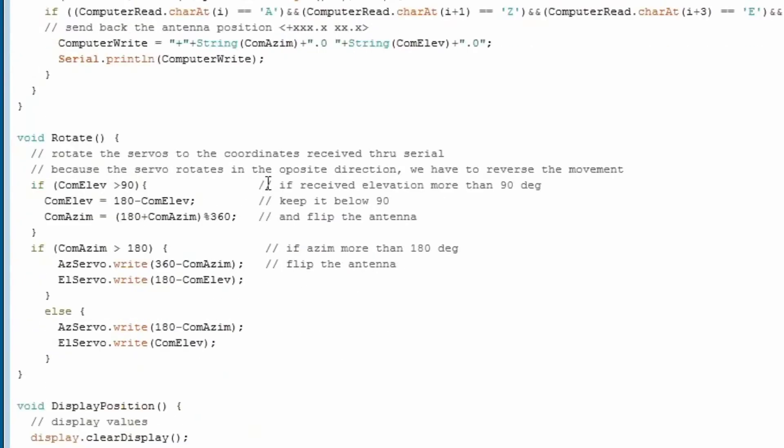The encoders only move 180 degrees. In order to cover 360 horizontal, I had to make a trick and in the second half of the circle, the antenna turns on its back to continue tracking.